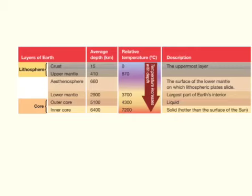If I were to make a scale of the depths in kilometers: the crust would be 15, the upper mantle 410, the asthenosphere 660, the lower mantle 2900, the outer core 5100, and the inner core 6400.